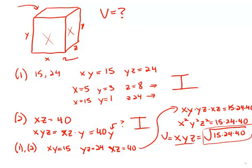So it means that this expression, that ugly square root expression, whatever that is, that is the volume of the box. So when we combine the two statements, we do have enough information to calculate the numerical value of the volume of the box. And so the answer is C.